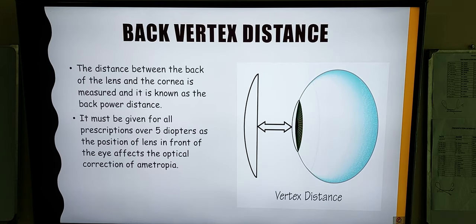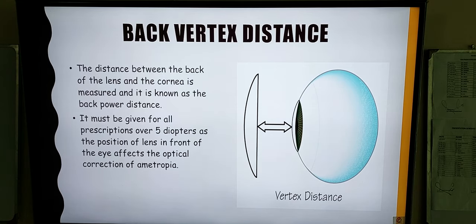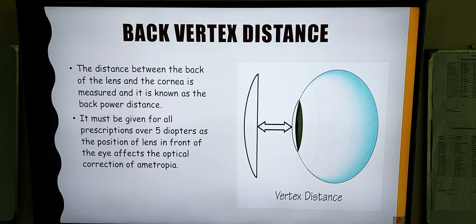So what is the back vertex distance? It is the distance between the back of the lens and the anterior surface of the cornea. It must be given for all prescriptions above plus or minus 5 diopters, as the position of the lens in front of the eye will affect the optical correction of ametropia in high power lenses.